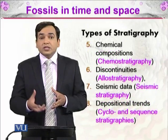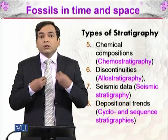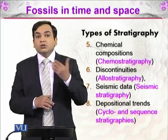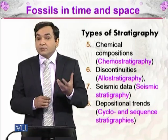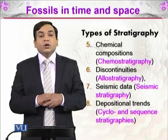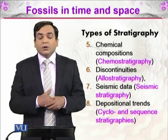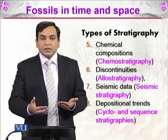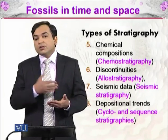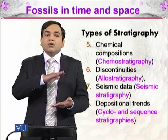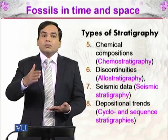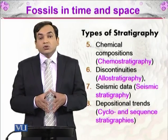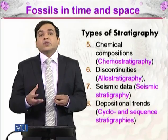There is also chemical composition stratigraphy, where you study different isotopes and chemicals in different rock layers. Then there are discontinuities — gaps between layers caused by erosion — and seismic data from earthquakes that provides information about rocks. Finally, depositional trends vary across seasons, and sequence stratigraphy looks at ordered patterns, such as simple to complex organisms and more condensed rocks at depth becoming less condensed toward the surface. These are all the types and applications of stratigraphy.